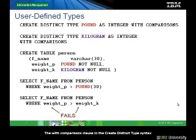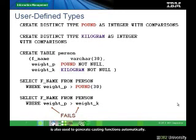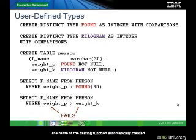The with comparisons clause in the create distinct type syntax is also used to generate casting functions automatically. The name of the casting function would have the same name as the UDT created. For example, if the pound UDT is created using with comparisons, a corresponding pound casting function is also created.